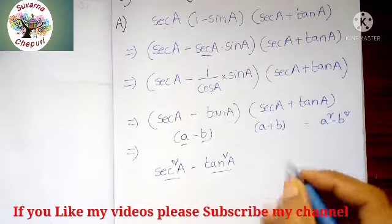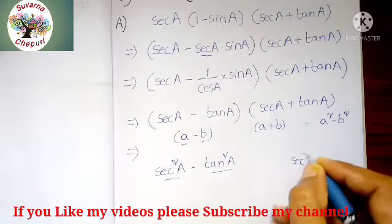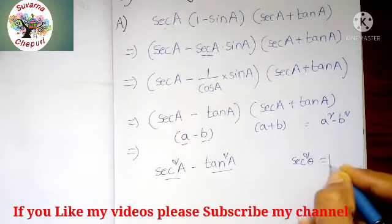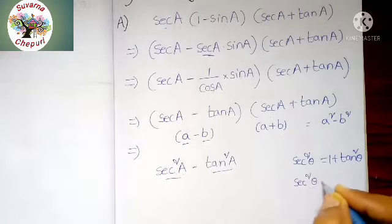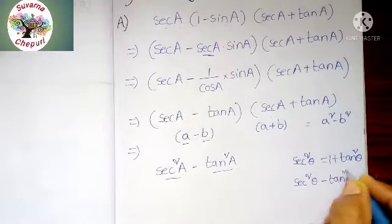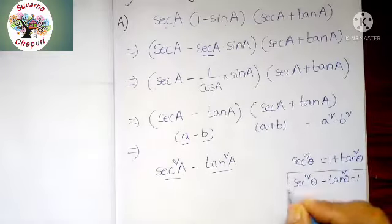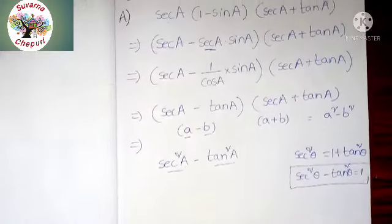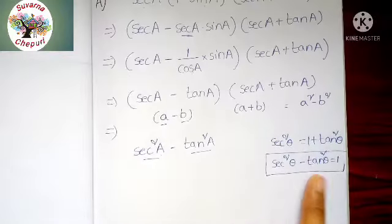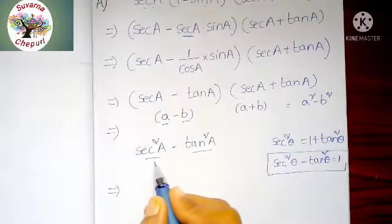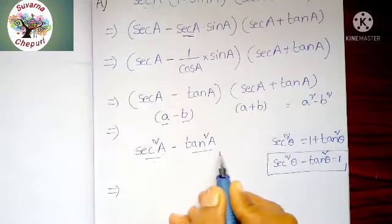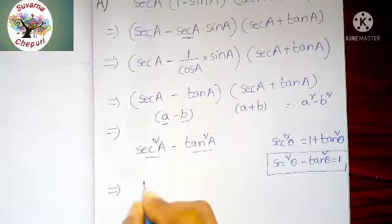What is the trigonometry identities formula? Secant squared theta equals 1 plus tan squared theta. Here, the answer is secant squared A minus tan squared A. So secant squared theta minus tan squared theta equals? By using trigonometry identities, secant squared theta minus tan squared theta equals 1. So secant squared A minus tan squared A means the answer is 1.